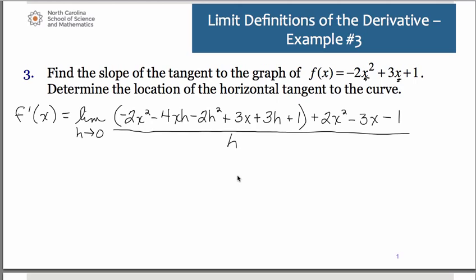Now if you did your algebra correctly, a lot of terms should cancel out. If they don't, you did something wrong. So the 2x² terms will cancel, the 3x's will cancel, and then the constants cancel. So notice all you're left with is -4xh - 2h² + 3h. So let's just rewrite that so you can see pretty clearly what we have.